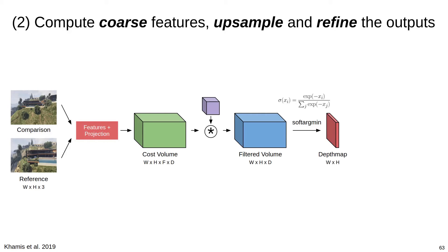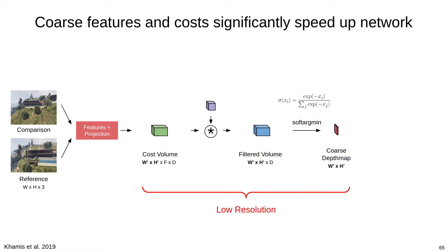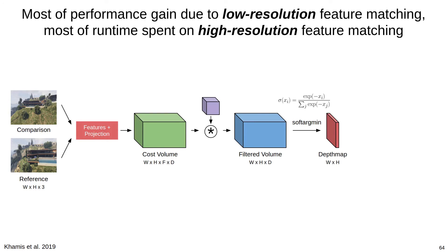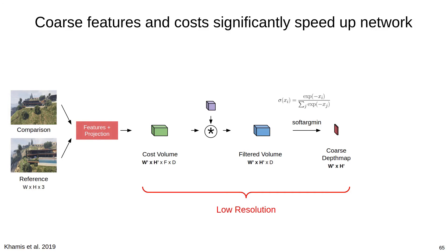The second way we'll overcome the limitations imposed by viewpoint compensation is by following StereoNet from Khamis et al., where we'll only compute low resolution features and matching costs, but then upsample and refine the outputs to full resolution. As Khamis et al. outlined in their paper, most of the performance gained for learned MVS systems occurs by matching low resolution features. However, most of the runtime is actually spent on matching high resolution features. Reducing the feature map and cost volume resolution in this way can significantly speed up execution of the network.